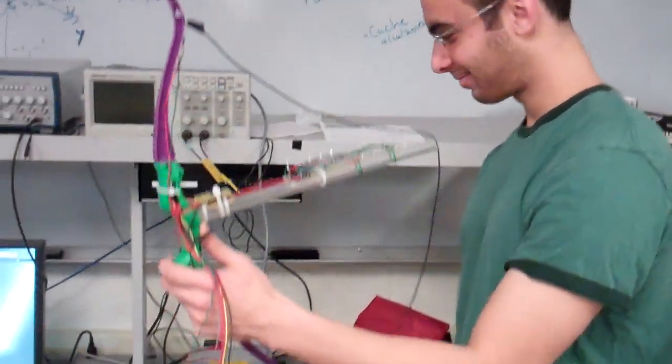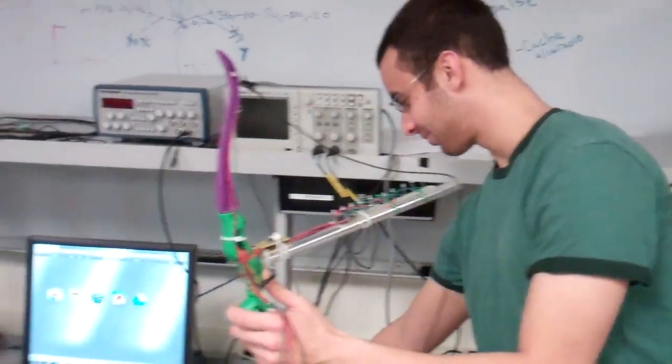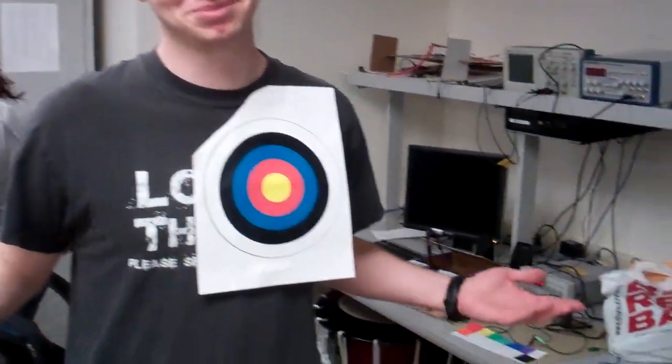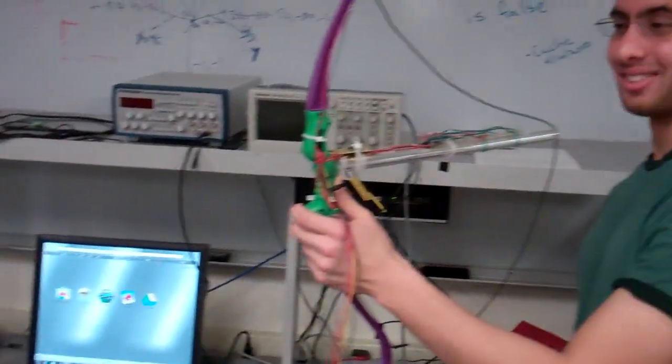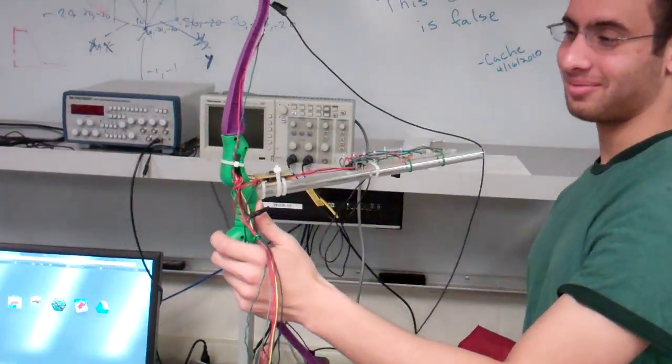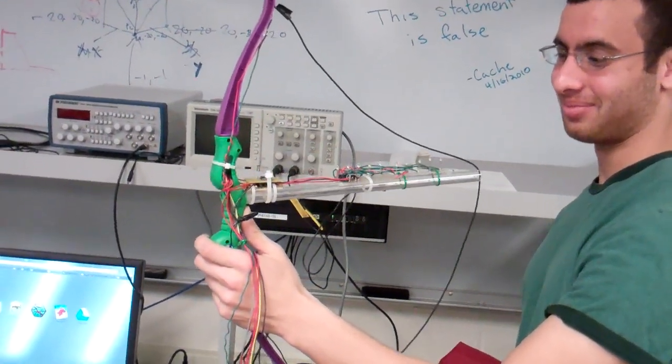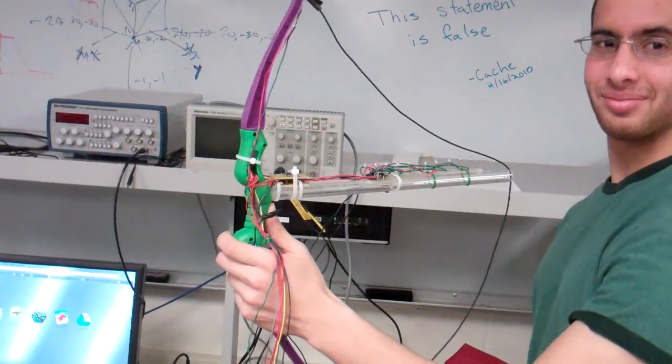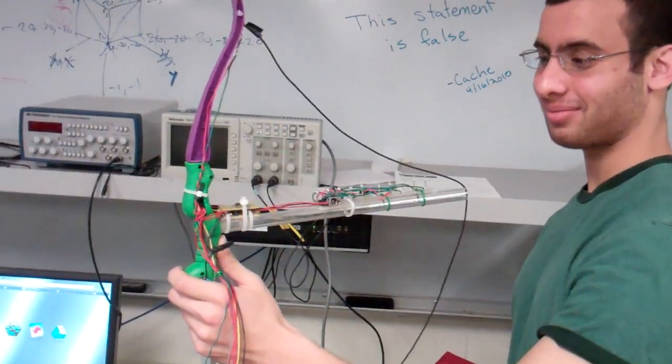We have here a virtual archery, and I want to emphasize the virtual because it appears as if the target is on one of our students. And so you have a peculiar-looking purple and green bow, and show me how it operates. Tell me about how it operates.